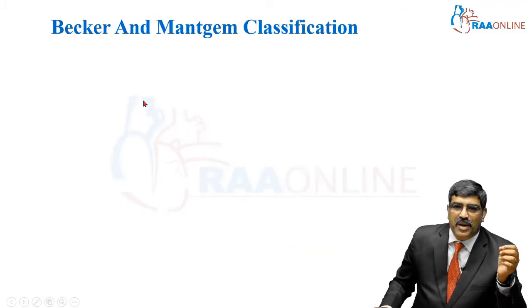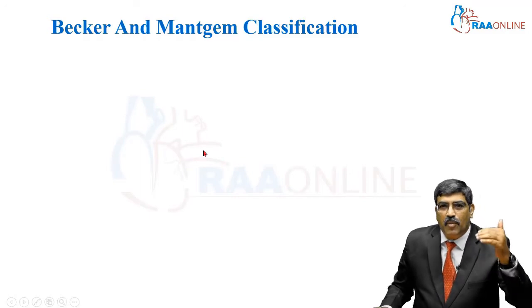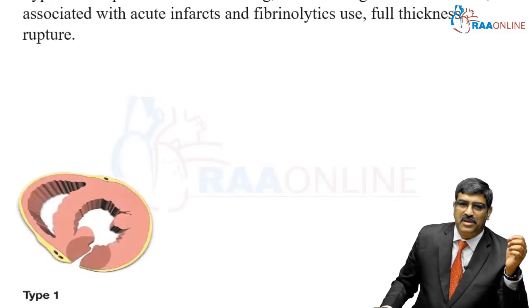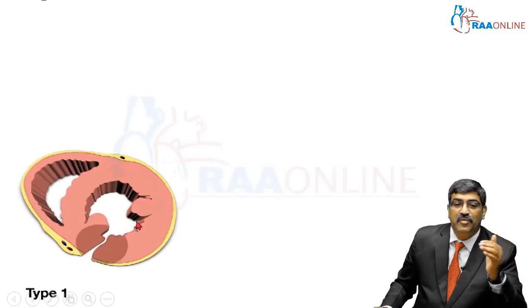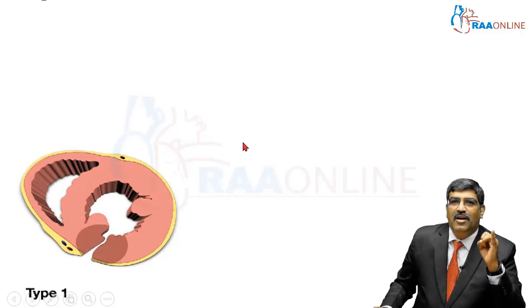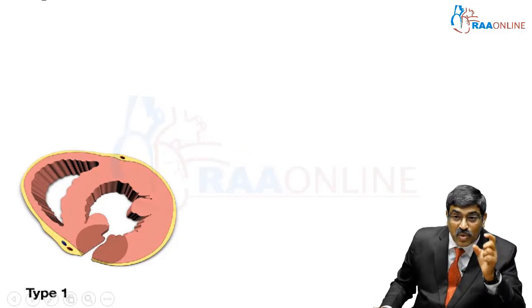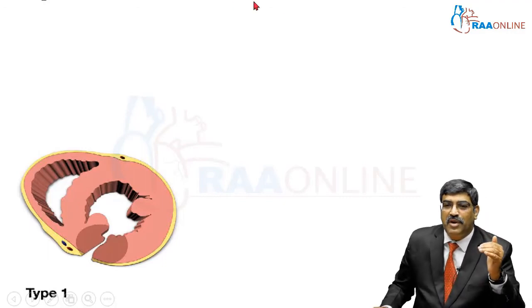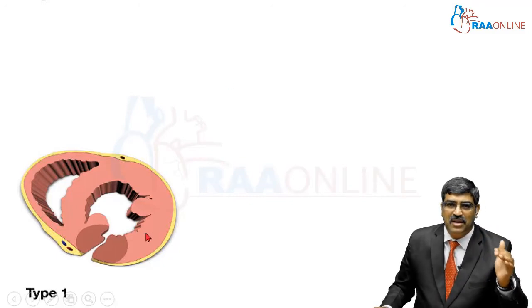Another classification is the Becker and Mangtem classification, which is used for free wall rupture but the nomenclature applies to ventricular septal rupture as well. In Type 1, there is an abrupt tear without thinning. It occurs within the first 24 hours, is associated with acute infarct and fibrinolytic therapy, and is a full-thickness rupture.